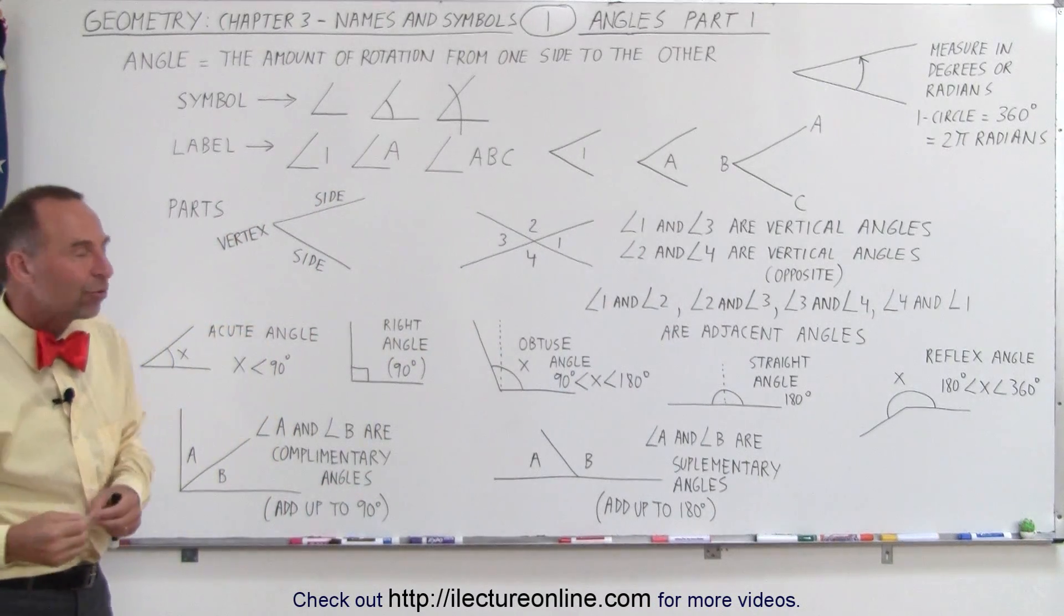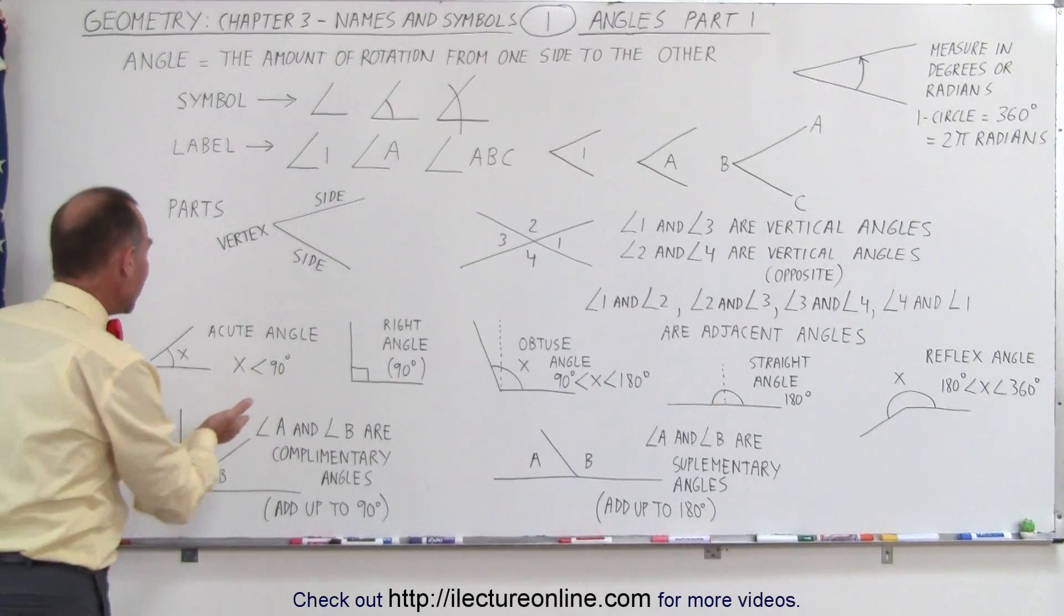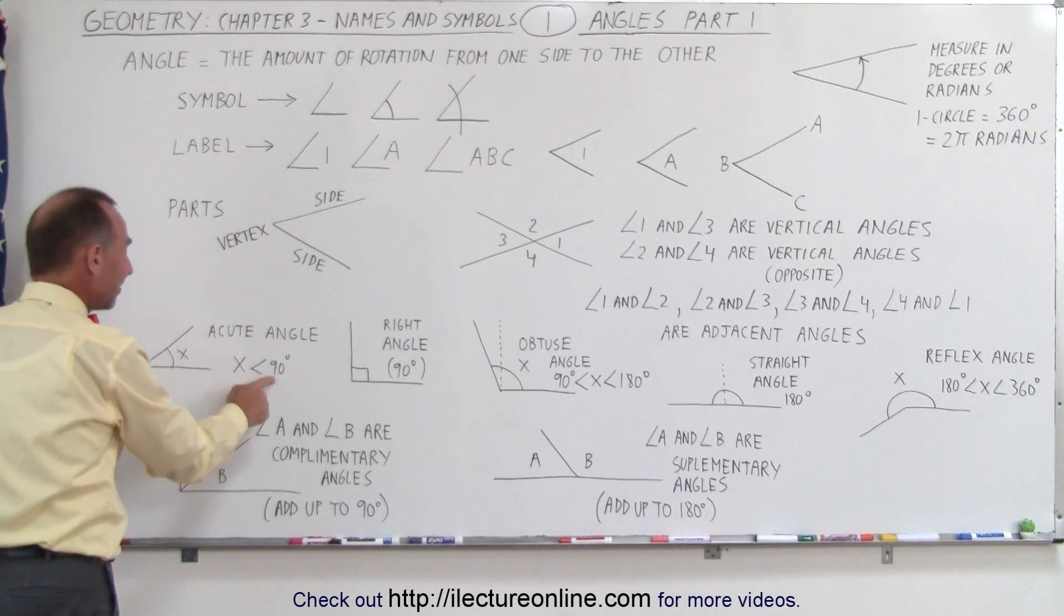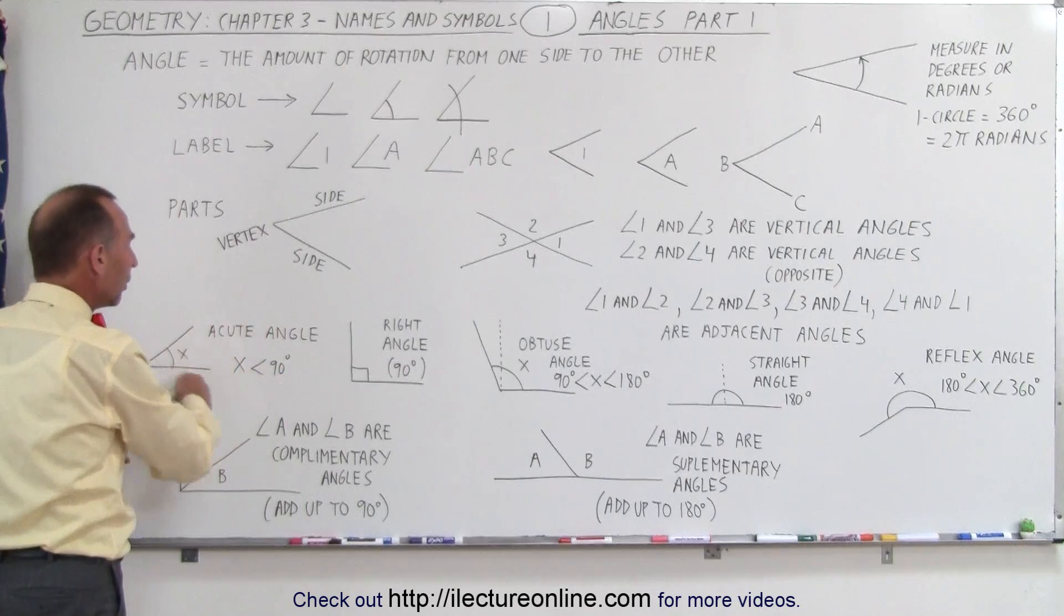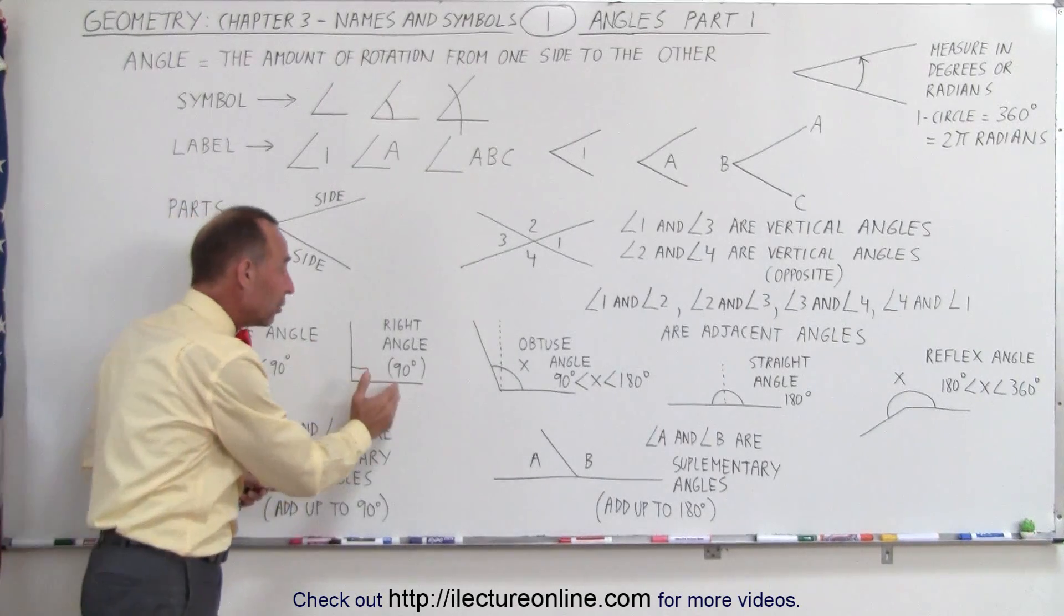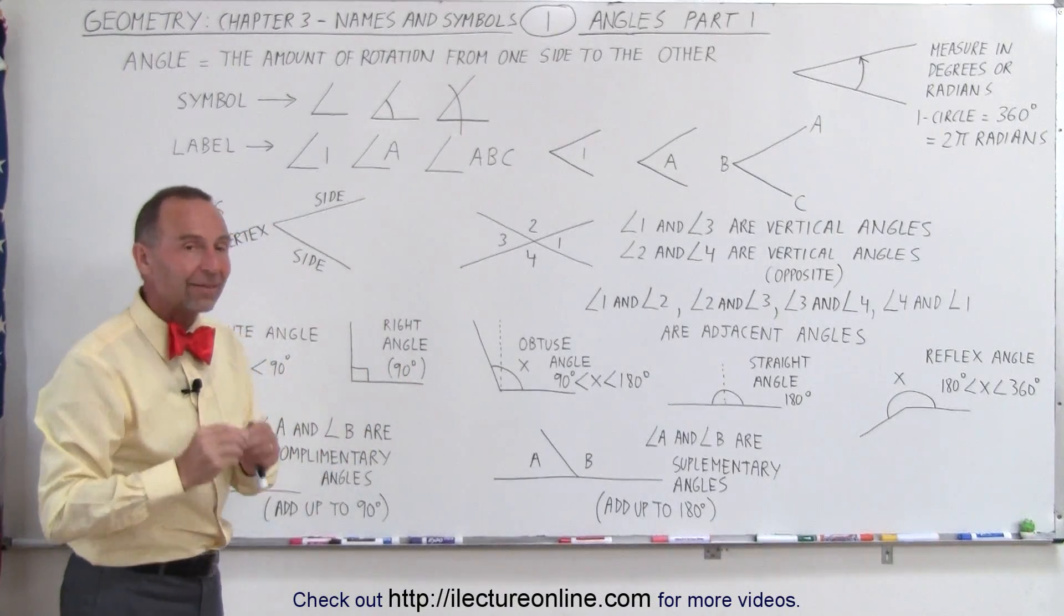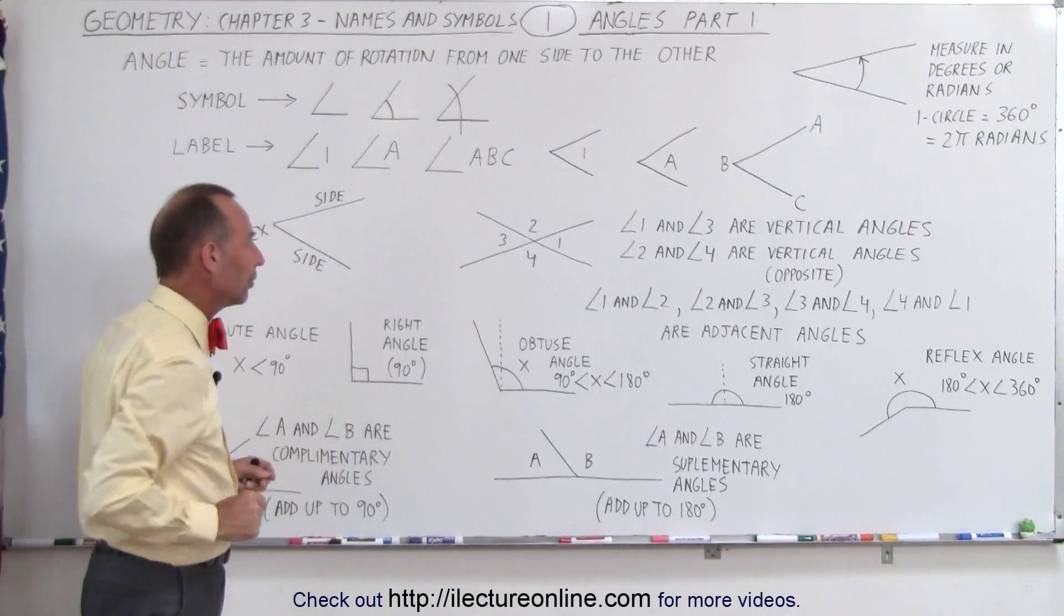We also have special names for angles depending upon how large the angle is. If the angular size is less than 90 degrees, we call them acute angles. If the angle is exactly 90 degrees, we call it a right angle. And we use this little symbol here to notate that it's a right angle, that the angle is 90 degrees.